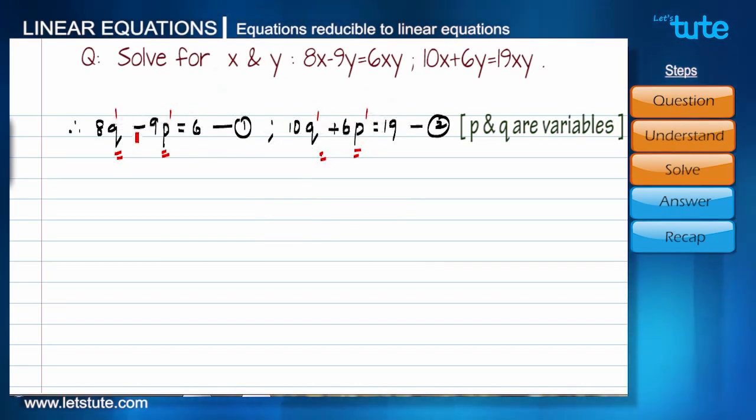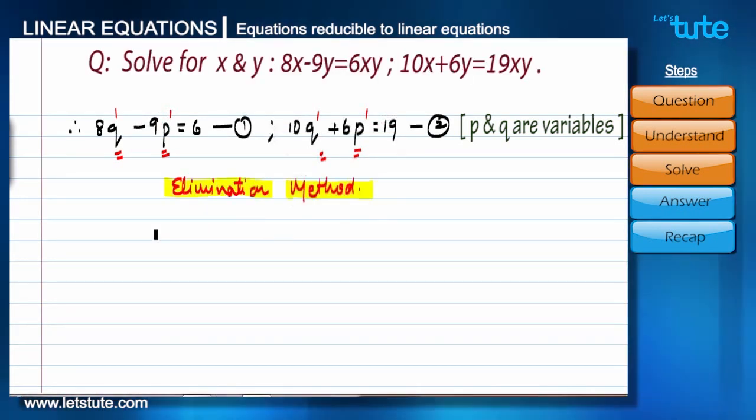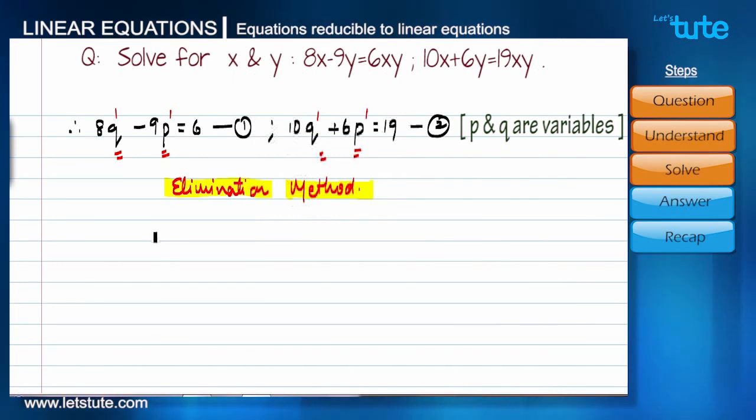We can solve them by any method which we have learnt in previous sessions. Let's solve them by elimination method. It is purely your wish if you want to solve it by substitution method or cross multiplication method. But for now, let's follow the elimination method. We are having these two equations: 8q minus 9p equals 6 and 10q plus 6p equals 19.